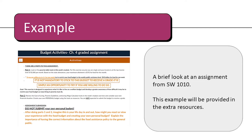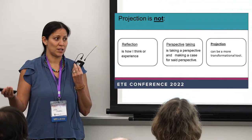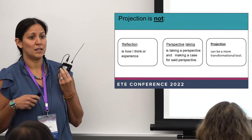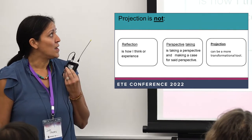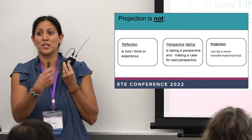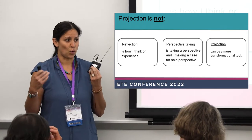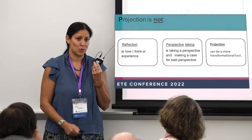I am a social work professor, and this activity goes through a food assistance policy. My students live off a $48-a-week food allowance — they don't have to do this, but it is interesting to see. They then get to reflect on how they might view the population they're going to be working with, and also how misinformation might impact policy and how we can correct information to make progressive changes in policy. Projection is not reflection, because this is how I think or experience something; it is not perspective taking, because that's making a case for a perspective. This is kind of an elaborate bridge of all of these things into one, which can be a more transformational tool.